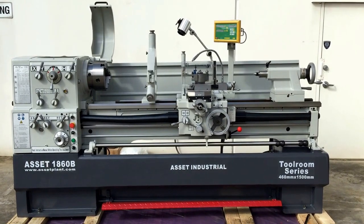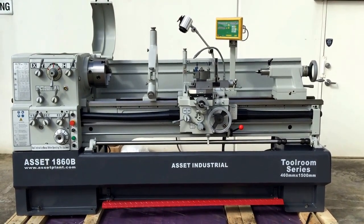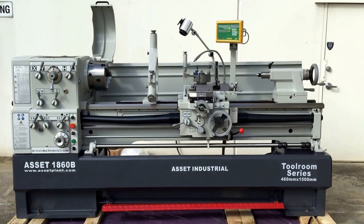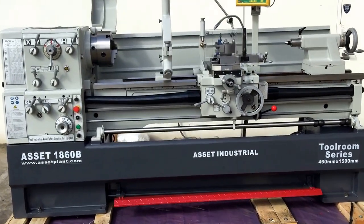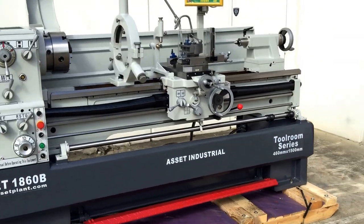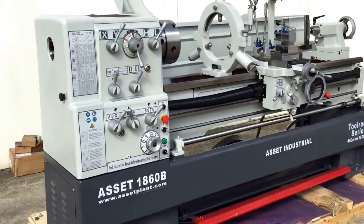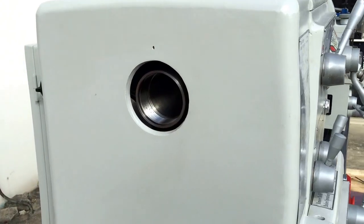Our 1860B has 18 inch swing over the bed plus the gap and also 60 inches between centers. This 1860B is a very popular lathe used throughout the tool making, tool room and general engineering business.